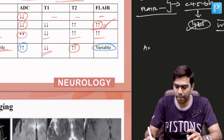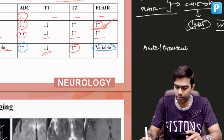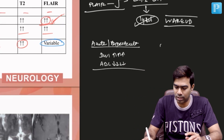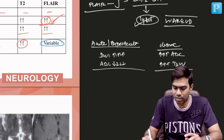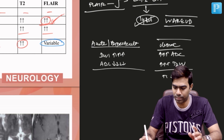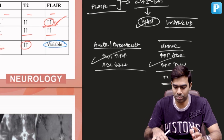In summary — in acute and hyperacute strokes, you will have high signal in DWI and low signal in ADC. In chronic strokes, you will have high signal in ADC and high signal in T2-weighted imaging, while FLAIR and DWI changes are variable and T1 shows low signal. This is how you determine whether it is an acute, hyperacute, or chronic stroke based on MRI.